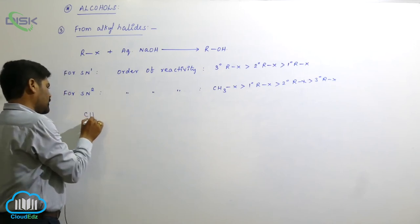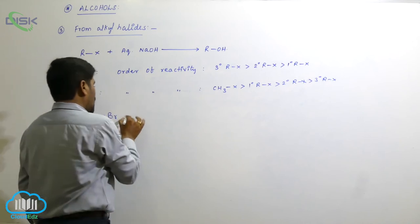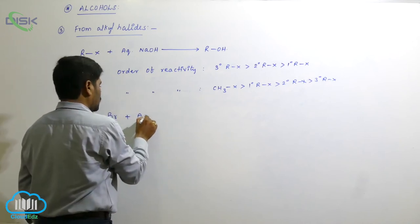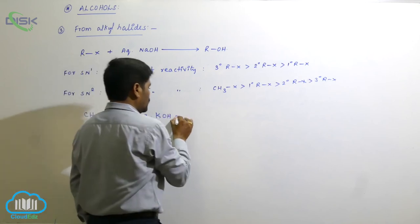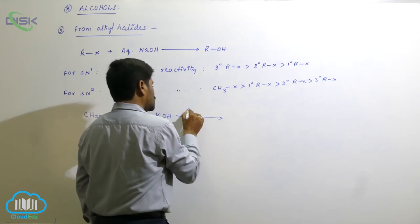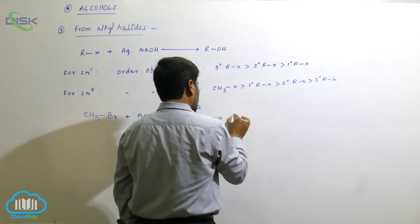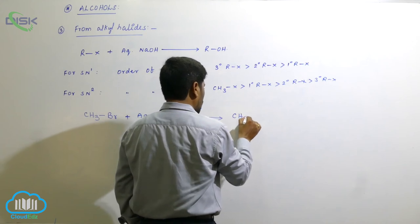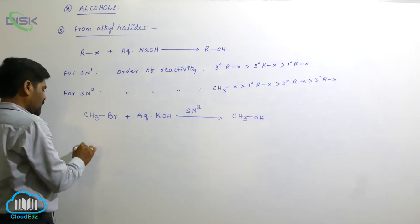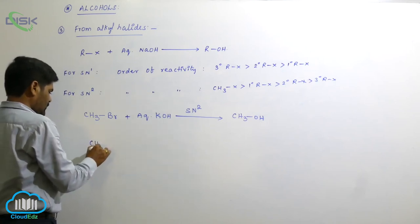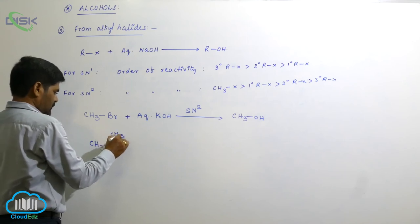For example, methyl bromide reacted with aqueous potassium hydroxide follows the SN2 mechanism, and the product is methyl alcohol.